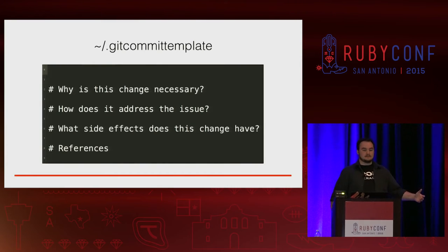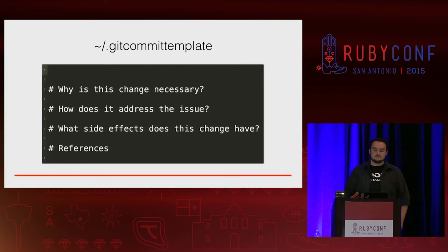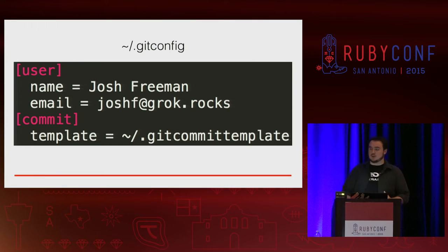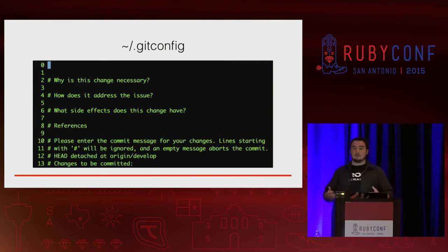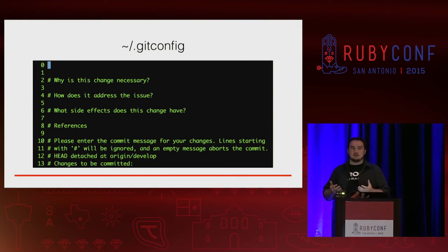The first thing I do is create a git commit template — just a standard text file with a set format. For the commit messages, if you have a comment block in the template, it will be ignored and won't show up. You create your git commit template, then go to your git config and add the template, pointing to the file you're using. When you run git commit, it will pull up your text editor with this template as a skeleton of the things you need to be talking about.